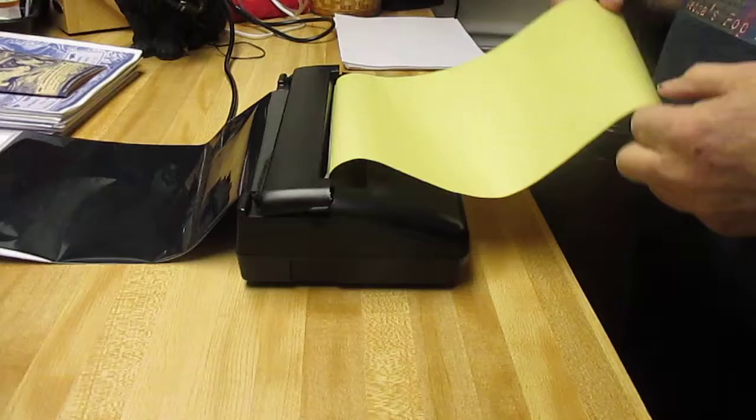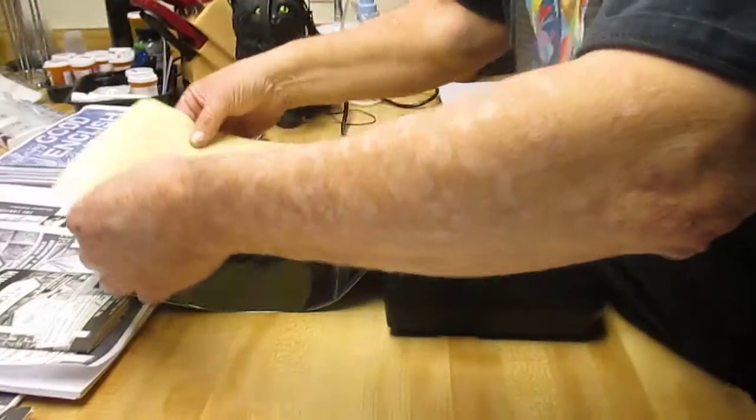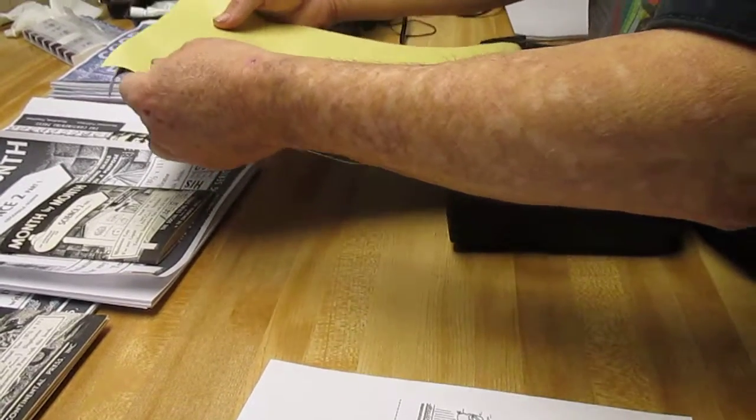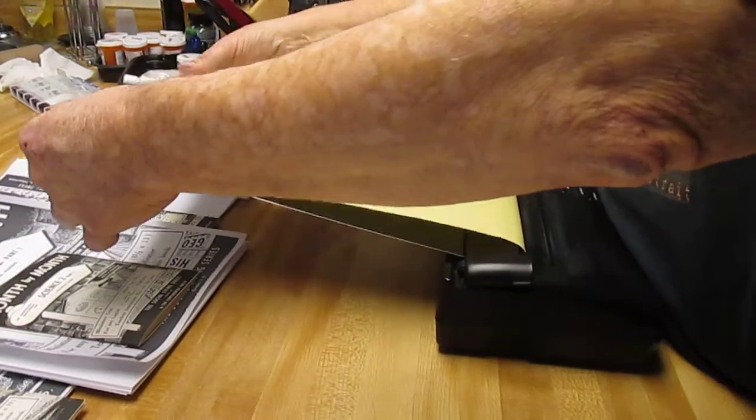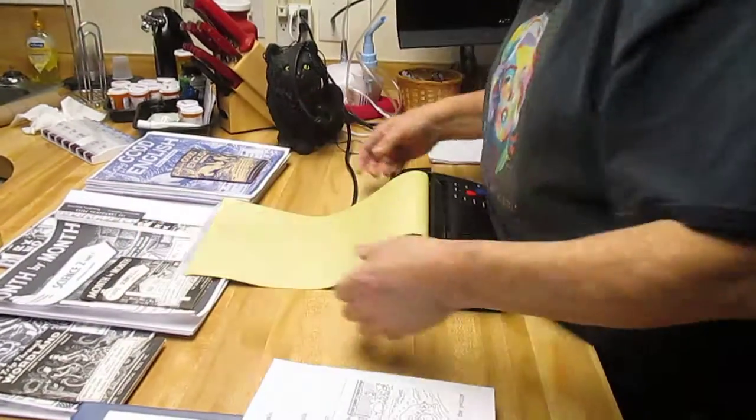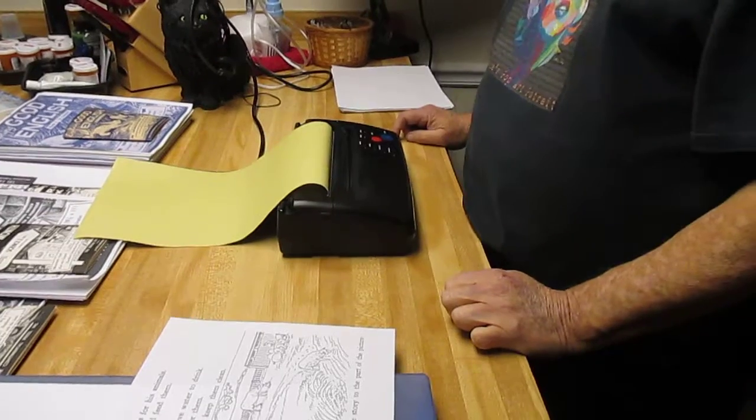So I've got it centered. One thing I do that they don't tell you to do is I center this piece and this piece together, and I just pull it to make sure that they're straight and even. Then when it's done I close it down.